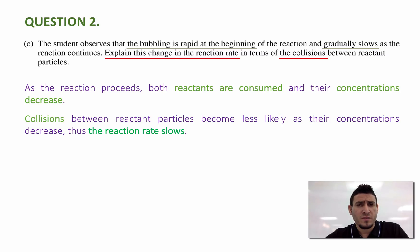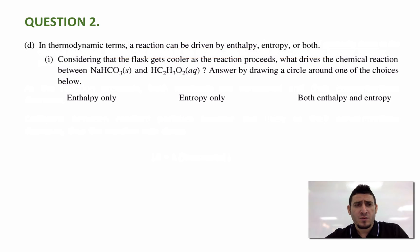Now the question asks us to justify it in terms of collisions. But if this wasn't the case, we could use the expression of the rate: rate equals K multiplied by the concentration of the reactants. And we could say, since the concentration of the reactant decreases, the rate will decrease as well. Now let's move on to the next question.